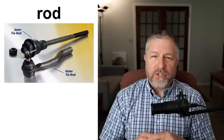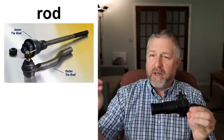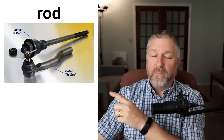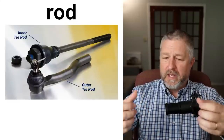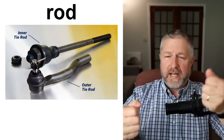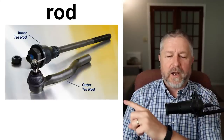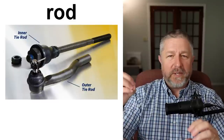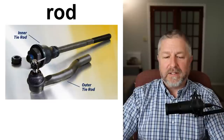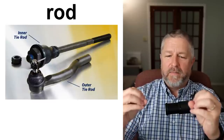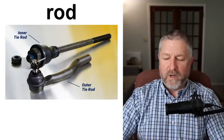A rod. Anytime we connect one part to another part with something like this, we call it a rod. A rod generally doesn't turn — it's usually used to just connect one piece to another. For example, these are called tie rods; they connect one piece of your front end of a car to the other. So any kind of straight piece of metal that connects two things, we would call a rod.